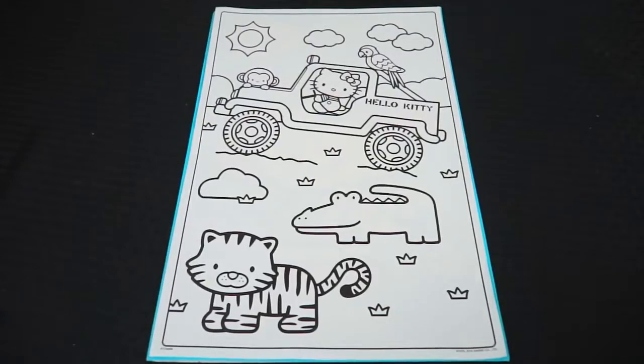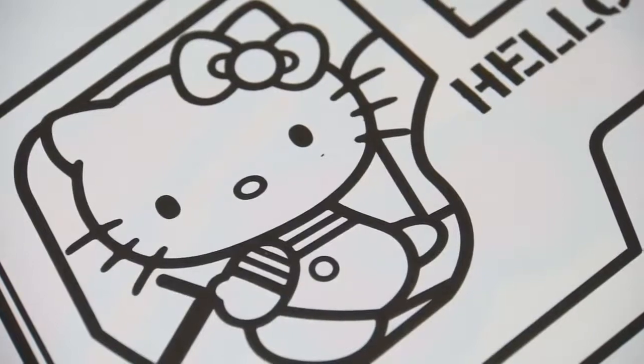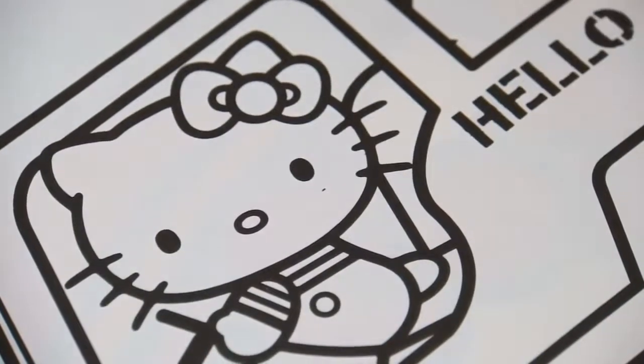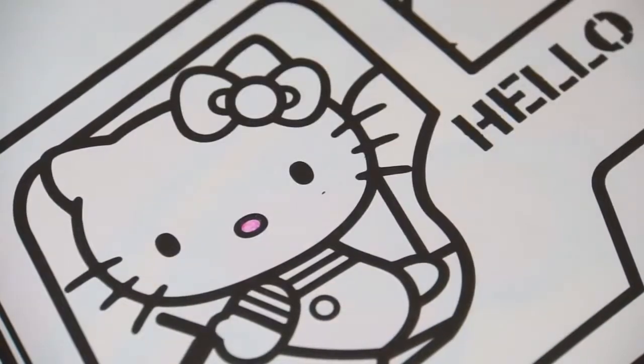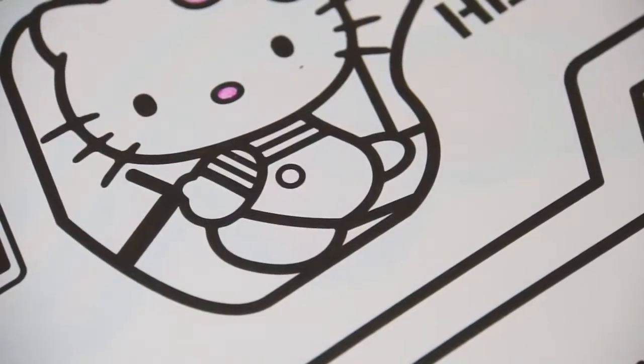Okay, so today I'm going to color this picture of Hello Kitty on a safari. Let's color in Hello Kitty first. Let's give her a light pink nose and a light pink bow on her head. And let's give her a light pink shirt with tan shorts.